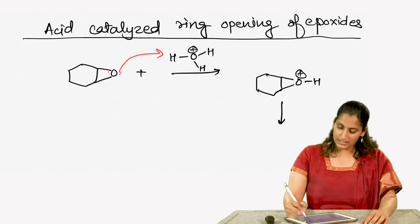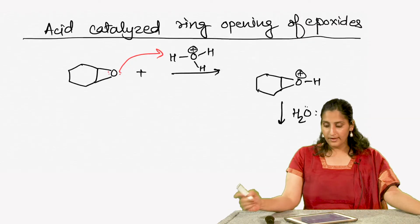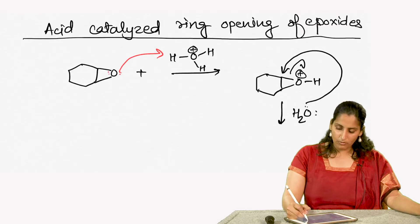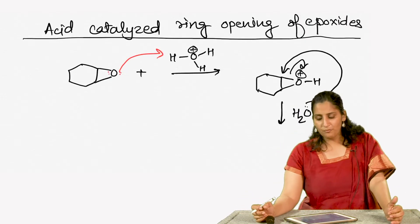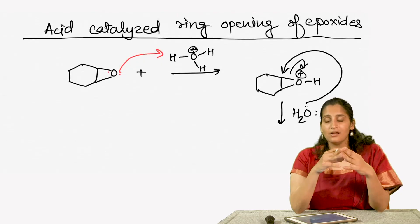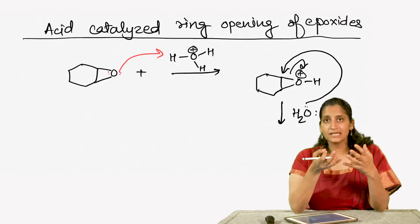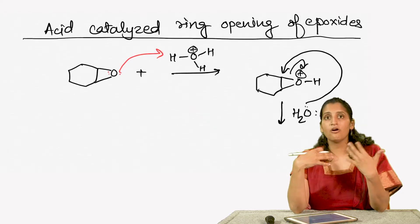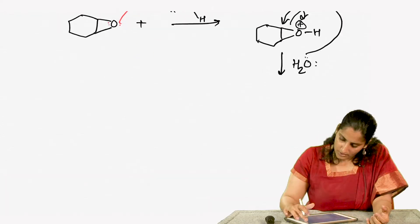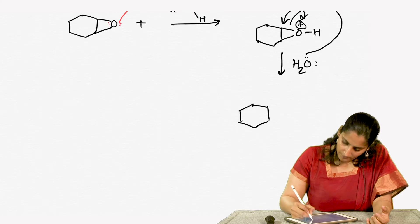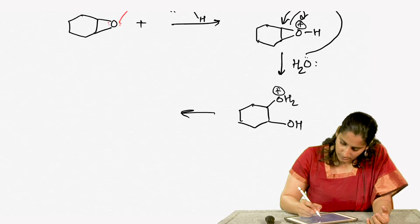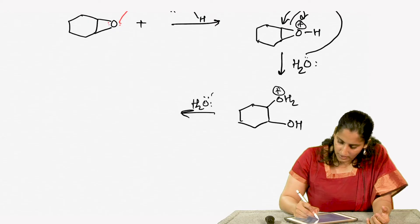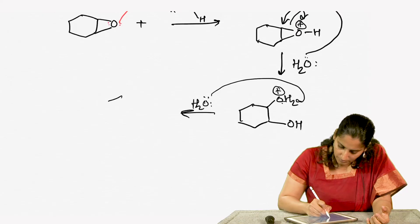What happens next is a water molecule will come and attack this carbon to kick open this particular three-membered ring. This step is very acceptable because you are releasing the strain present in the ring, and the attack of water is facilitated by the formation of a less strained molecule. This step results in formation of a protonated glycol.